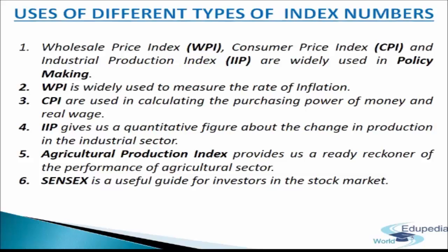The WPI is widely used to measure the rate of inflation. Inflation is a general and continuing increase in prices. If inflation becomes sufficiently large, money may lose its traditional function as a medium of exchange and as a unit of account; its primary impact lies in lowering the value of money. The weekly inflation rate is given by: (X_t − X_{t−1}) / X_{t−1} × 100. CPI is used in calculating the purchasing power of money and real wages. The Index of Industrial Production gives a quantitative figure about changes in production in the industrial sector, and the Agriculture Production Index provides a ready reckoner of the performance of the agriculture sector.